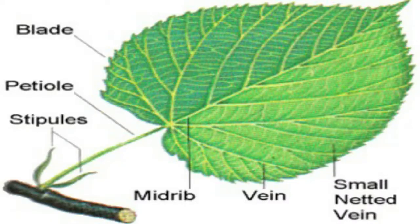Let us examine the parts of a leaf. The parts of a leaf are the blade, vein, midrib, and petiole. The expanded portion of the leaf is called the leaf blade. The leaf blade helps in absorbing energy from the sun.